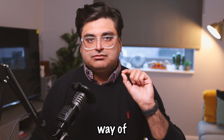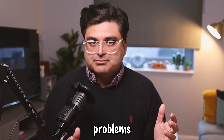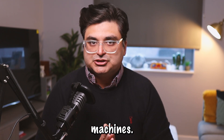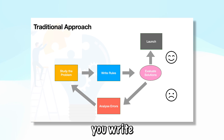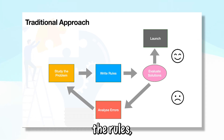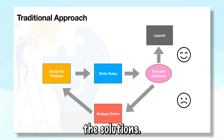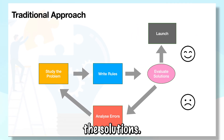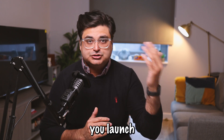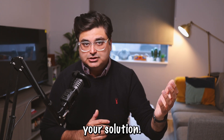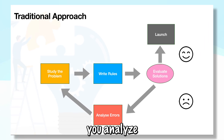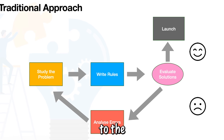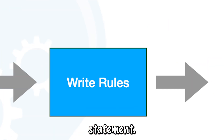Let's look at the traditional way of solving problems using machines. The traditional way is: you write the rules, you evaluate the solutions, if you're happy you launch your solution, if you're not happy you analyze the error, and you go back to the problem statement.